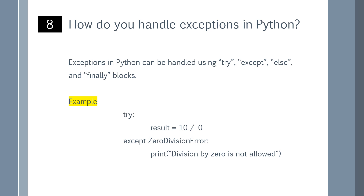How do you handle exceptions in Python? Exceptions in Python can be handled using try, except, else, and finally blocks. You can refer to the example shown on the screen.